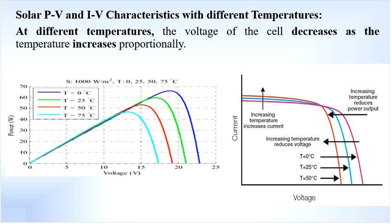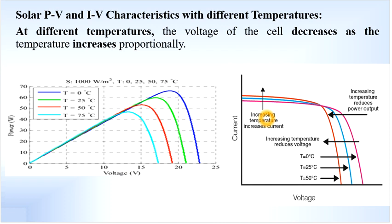The overall effect on power with respect to temperature is a reduction in power, because the variation of current with temperature is less when compared with the variation in voltage. Due to this, total power reduces in line with the voltage. Since the increase in current is less than the reduction in voltage, the product of current and voltage — that is, power — also follows the voltage, meaning with an increase in temperature there is power reduction.